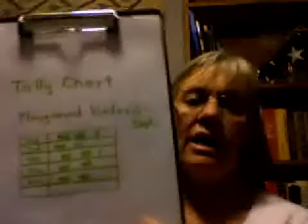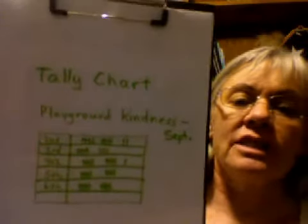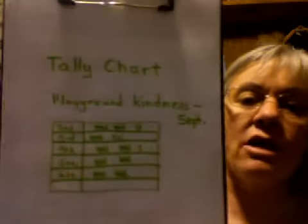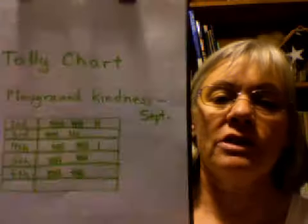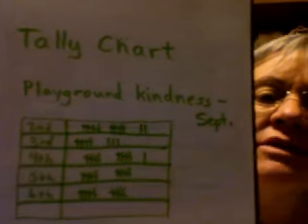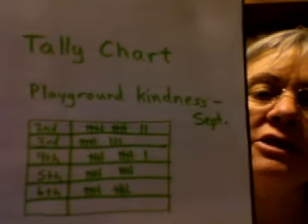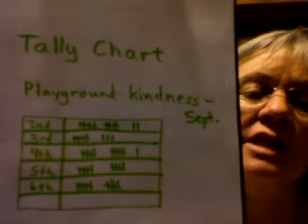I'd first like to show you a tally chart, which is a simple way of collecting data when you're just starting out to study a subject. I decided that we would pretend that we're counting all the kindness we see on the playground. This tally chart only shows our information from September. It tells how many second graders were observed being kind, third graders, fourth graders, fifth graders, and sixth graders.